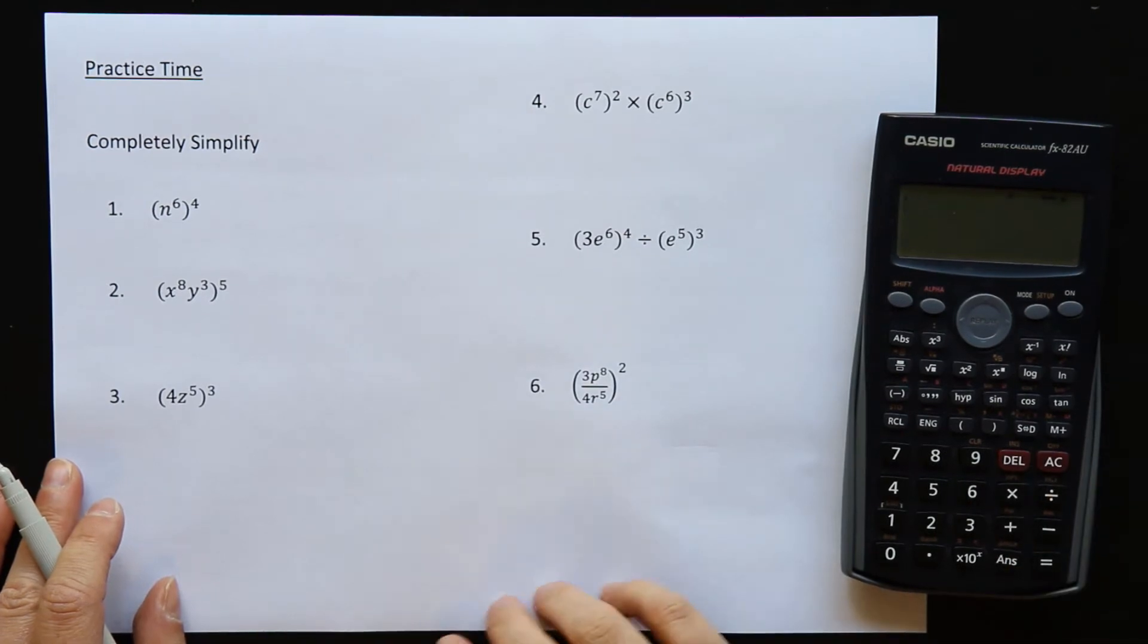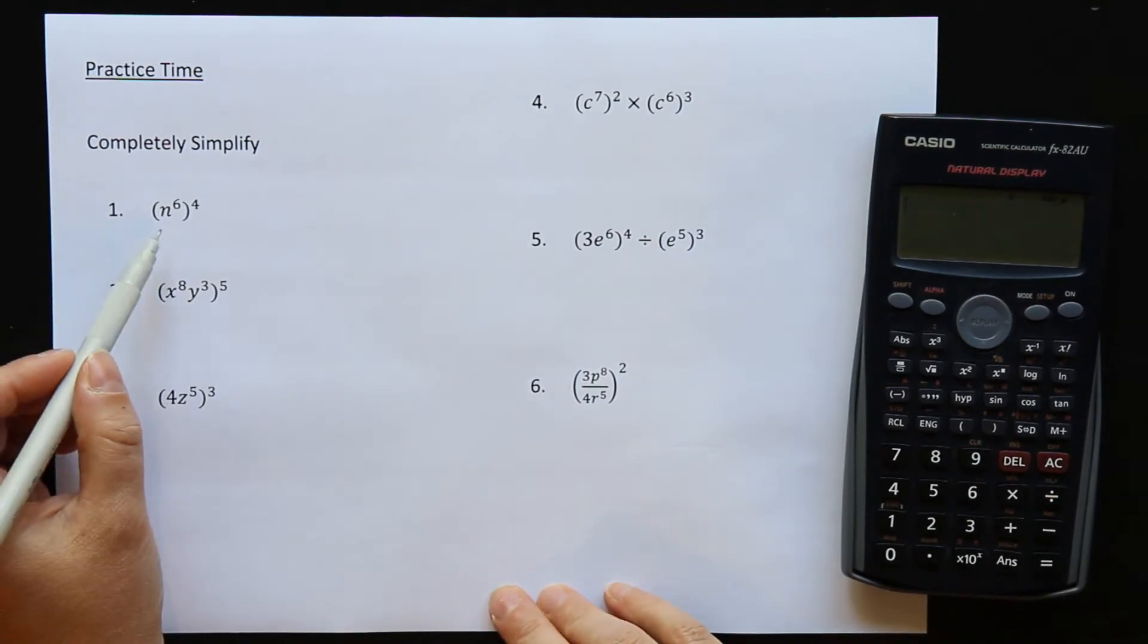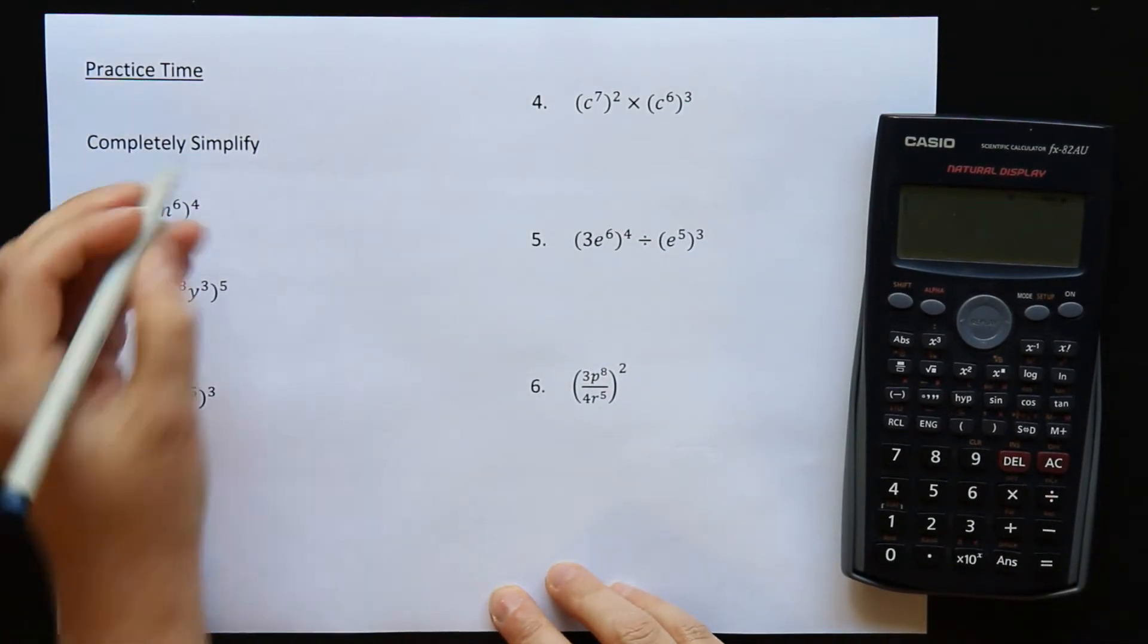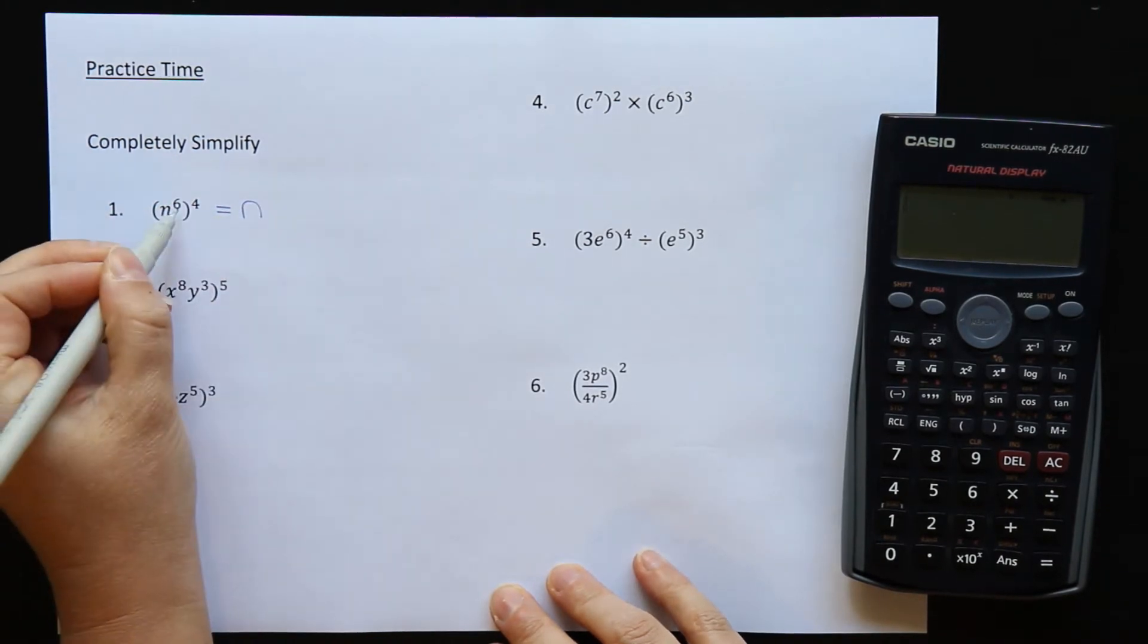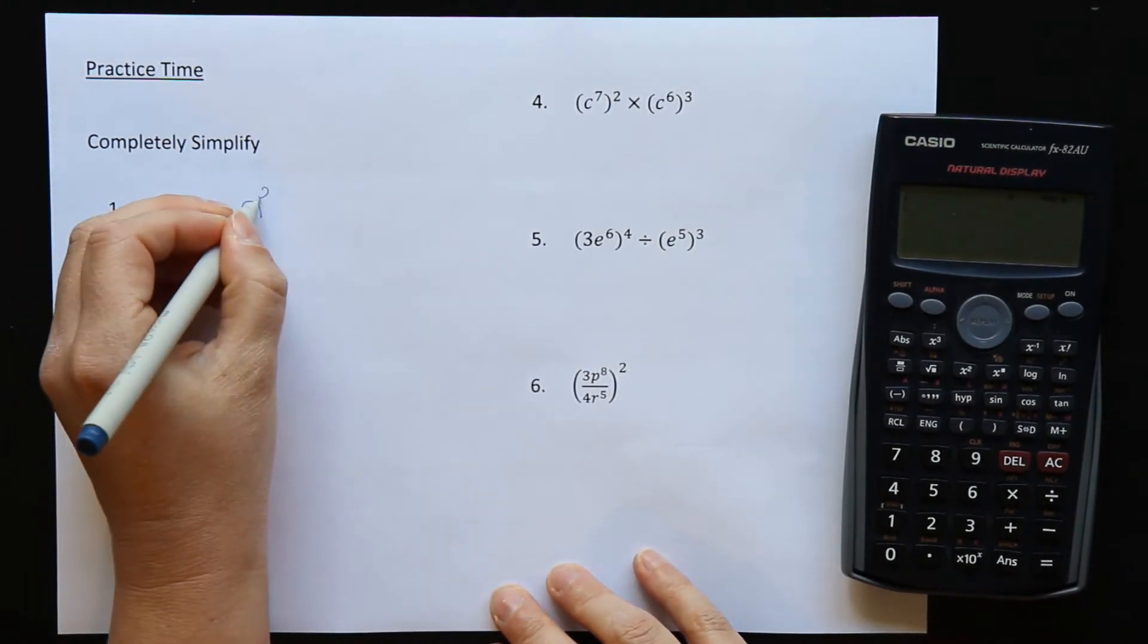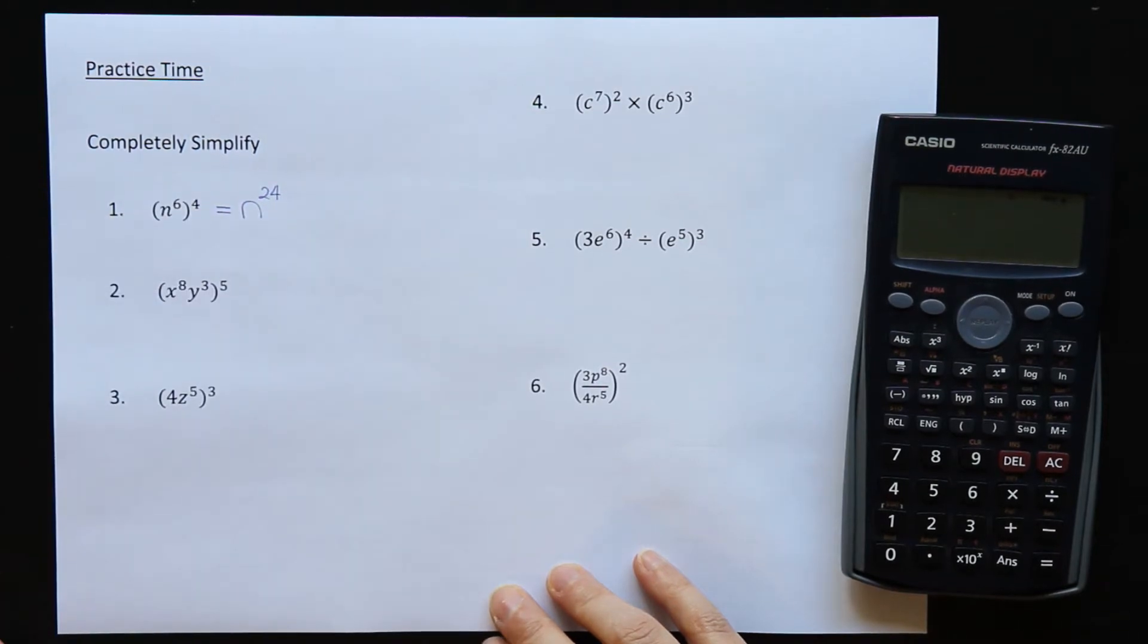Okay, so question 1. n is the base, so all you have to do is times 6 times 4 together to get 24. n to the power of 24.